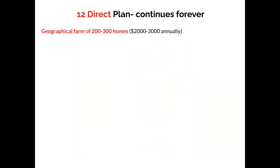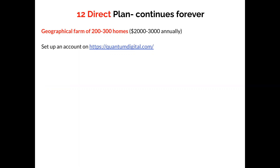The 12 Direct plan continues forever, very much like the 33 Touch, but the 12 Direct plan is typically based on a geographical farm rather than a sphere of influence farm. Your 33 Touch is your sphere of influence farm; your 12 Direct is to cold people — your geographical farm. I'm suggesting 200 to 300 homes. You don't want to start something and not finish it because you don't have enough money. If you start geographical farming and spend all your money upfront then can't continue it over a long period of time, you've thrown your money out the window.